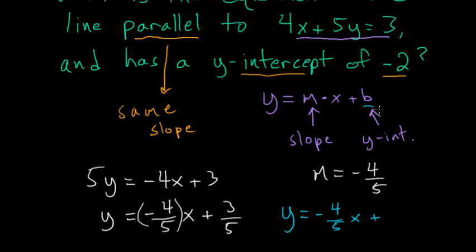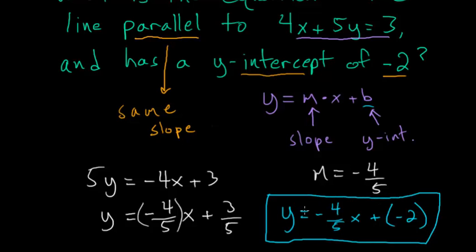And b, we know, is just the y-intercept, and we're given that the y-intercept is negative 2. So we have to add negative 2 here. So this equation here is the equation of the line that we were looking for.